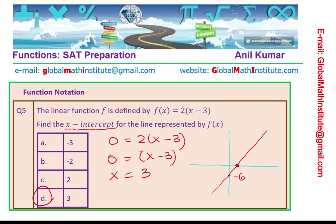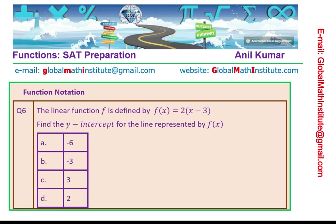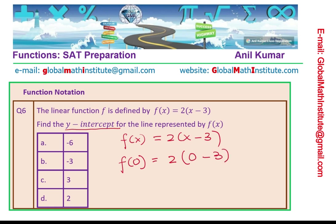Let's find the y-intercept in the next example. The function f of x equals 2 times x minus 3 — the same function. The y-intercept is the point where x is 0. So we find f of 0: substituting 0 gives 2 times minus 3, which equals minus 6. Therefore option A is the correct option.